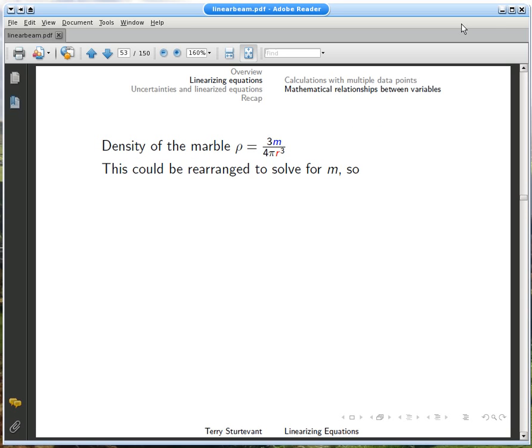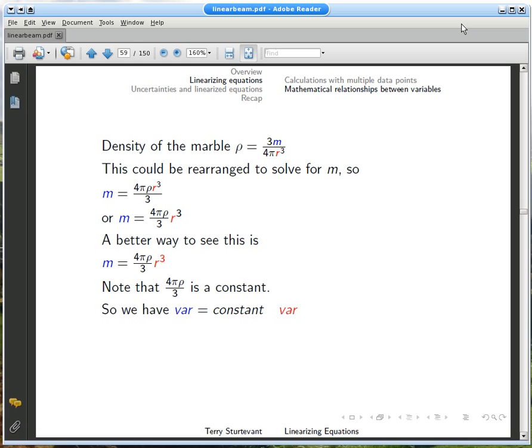From the example of the density of a marble, the original equation has two variables, mass and radius, and four constants: 3, 4, pi, and the density. We can rearrange this to get one variable on the left side of the equation.